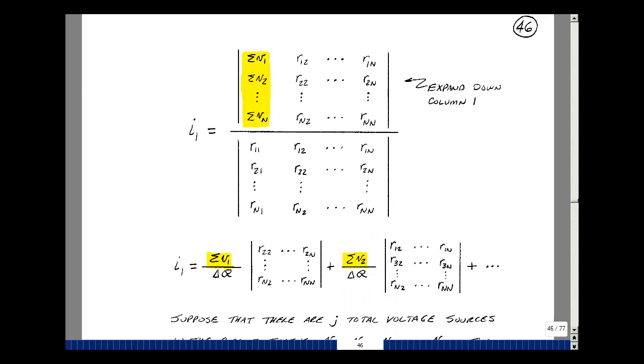Using Cramer's rule, we could take the left-hand side of the equation, then, and put it into column one. Now, let's expand on column one. So what we're going to get, then, is the summation of the voltage drops in a counterclockwise direction in mesh one times this determinant. The entries that are in here are only the resistances in our circuit. Divide that by the determinant of our mesh equations.